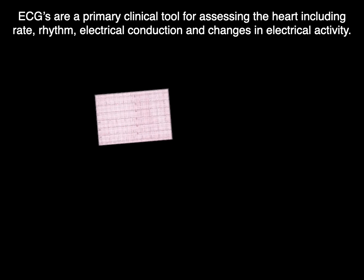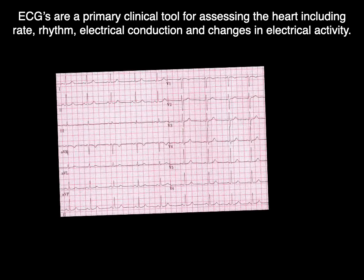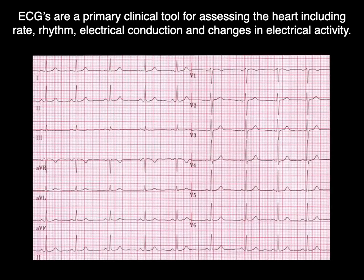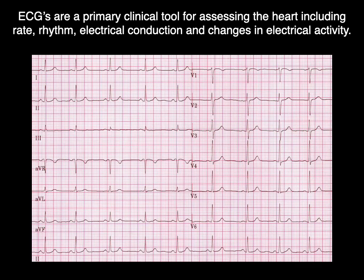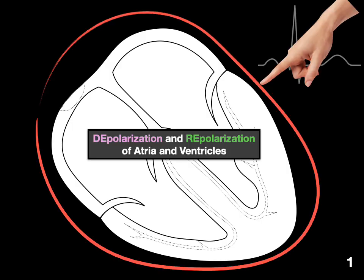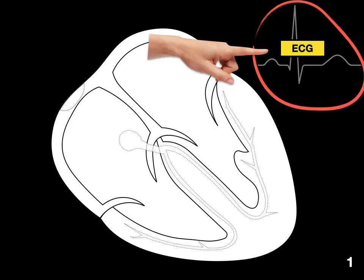ECGs are the primary clinical tool for assessing the heart, including rate, rhythm, electrical conduction, and changes in electrical activity. To cover this, we're going to look at this illustration to show the depolarization and repolarization of atrium ventricles and correlate the stages to this ECG.